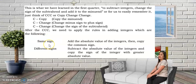Same sign — if the signs of the two integers being added are the same, just copy the common sign and add the integers. Different signs — if one is negative and one is positive, get the difference of the two numbers, then copy the sign of the greater number.